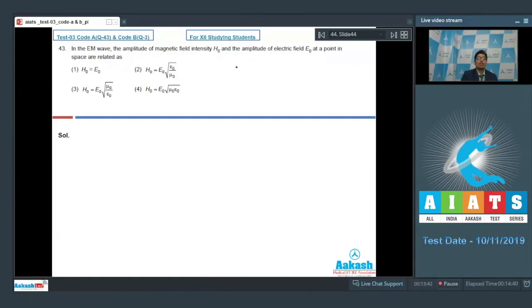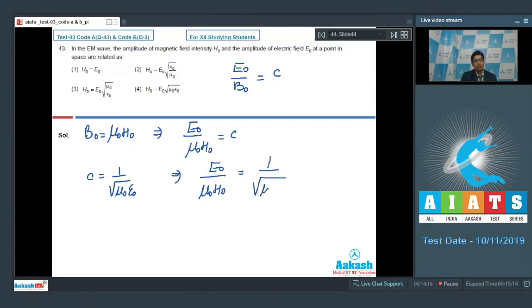For an electromagnetic wave, E0÷B0 is equal to c, the speed of the wave. Also, B0 can be written as μ0×H0. Therefore, E0÷(μ0·H0) = c. Now c can be written as 1÷√(μ0·ε0). On substituting the value, we get E0÷(μ0·H0) = 1÷√(μ0·ε0), which means E0 = H0·√(μ0÷ε0).